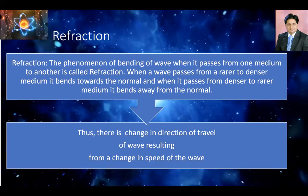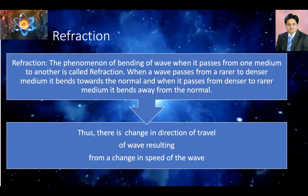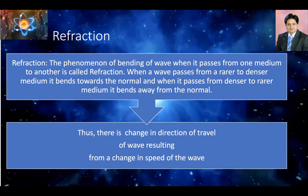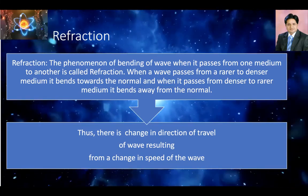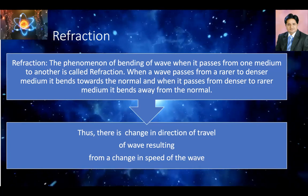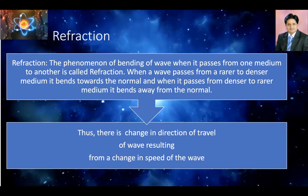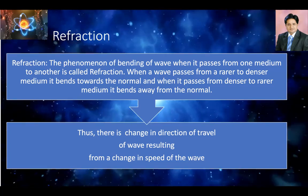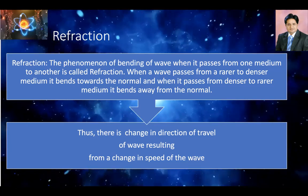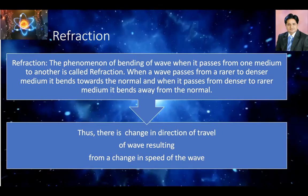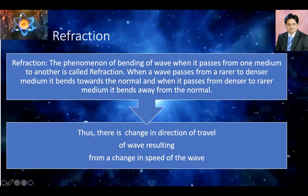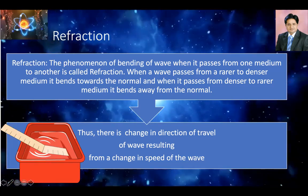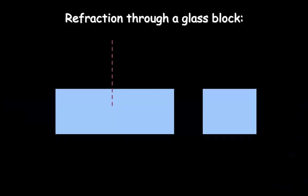This bending of light is called refraction. The change in direction of travel of the wave is because of the change in the speed of the wave in different mediums. So let's try to understand what happens actually in refraction.